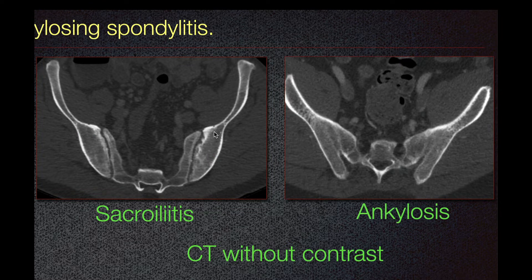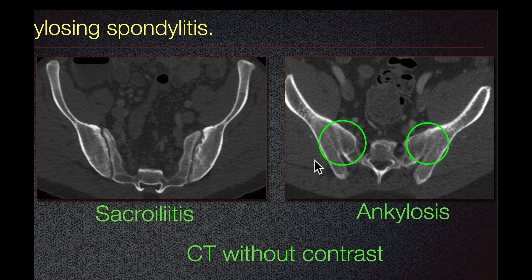In the late stage of ankylosing spondylitis, we can see fusion of the sacroiliac joint, or ankylosis.